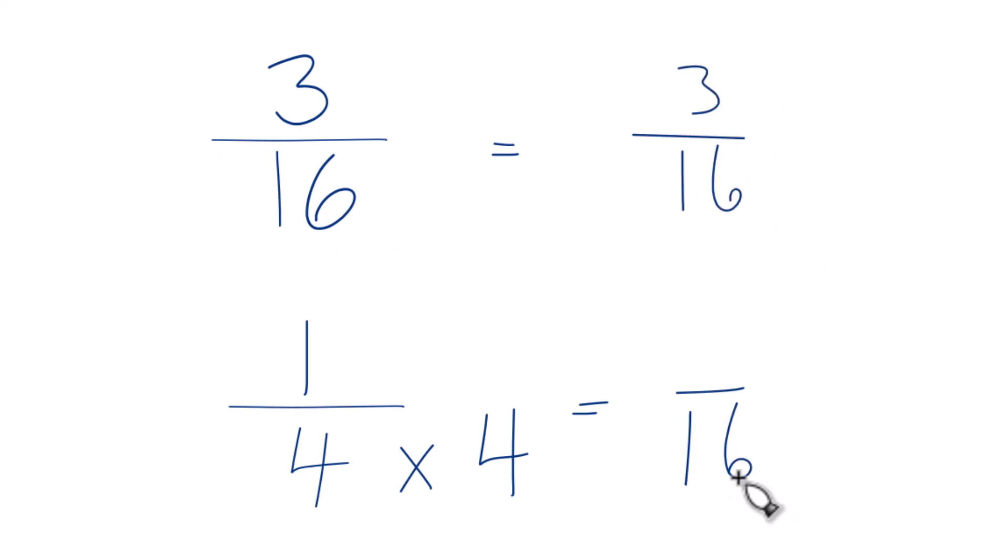So now we have the same denominator, but down here, since we multiply the denominator by 4, we also have to multiply the numerator by 4 as well. So 1 times 4, that would equal 4. The reason we can do that is 4 over 4 is just 1, so we can change the value just the way it's written.